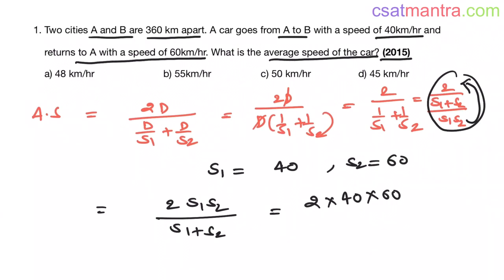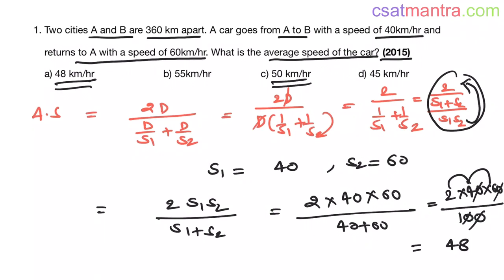Now this equals 2 into s1 times s2, this denominator will come in numerator, by s1 plus s2. We have s1 equals 40, s2 equals 60. So this equals 2 times 40 times 60 by 100. This equals 4800 by 100 equals 48. So the average speed is 48 kilometers per hour, my friends, not 50 kilometers per hour.